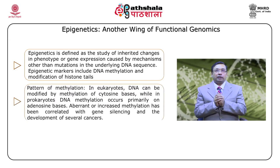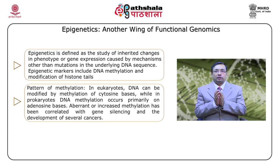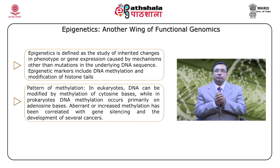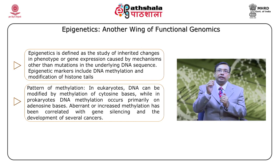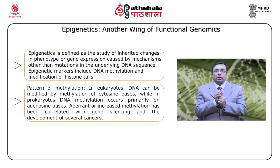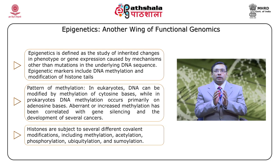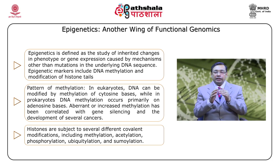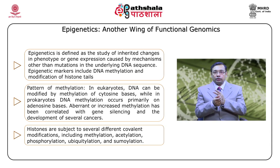Let's talk about the pattern of methylation, because methylation is an important phenomenon for gene expression regulation. In eukaryotes, DNA can be modified by methylation of cytosine bases, while in prokaryotes, DNA methylation occurs primarily on adenosine bases. Aberrant or increased methylation has been correlated with gene silencing and development of several cancers. Histones are associated with different covalent modifications, including methylation, histone DNA acetylation, phosphorylation, ubiquitination, and sumoylation.